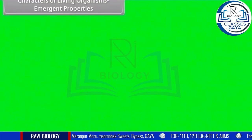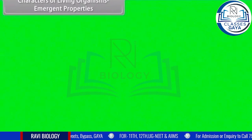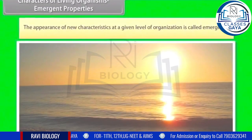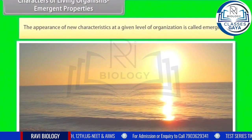Characters of living organisms — Emergent properties: the appearance of new characteristics at a given level of organization is called emergence.